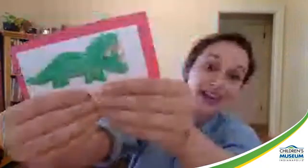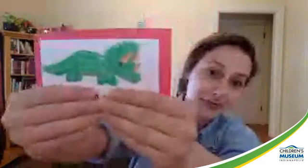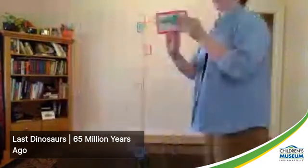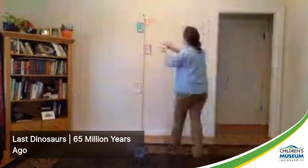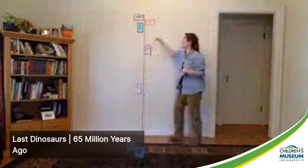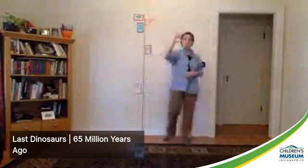All good things must come to an end for dinosaurs. Triceratops happens to be my favorite, but any dinosaur from the end of the dinosaur era works. Dinosaurs went extinct about 65 to 66 million years ago. This goes at 9 feet and 10 inches on the timeline. Even though dinosaurs were around for millions of years, you can see on our timeline that their entire span covers only a small stretch of our 10 feet.